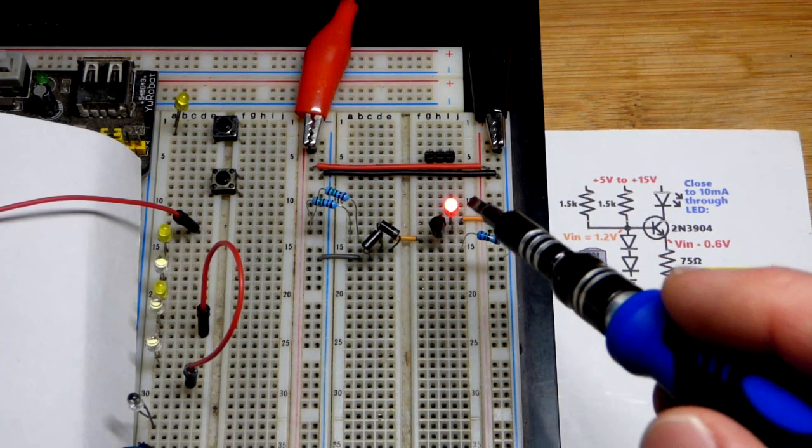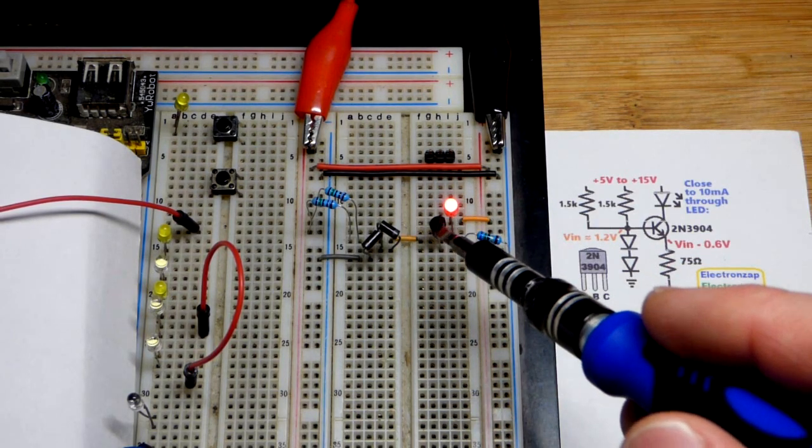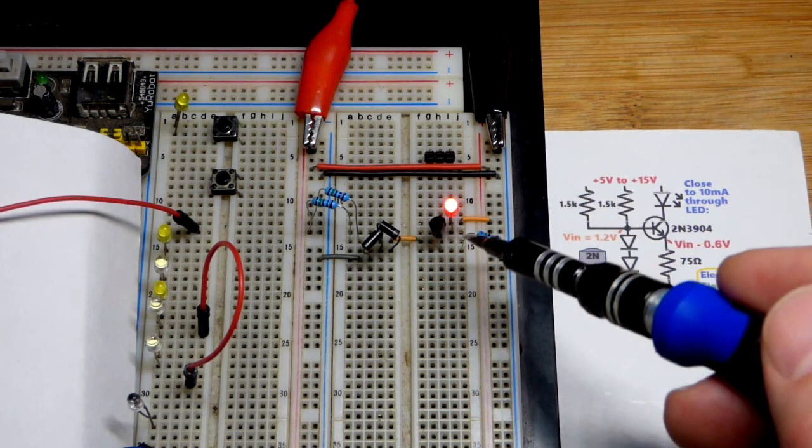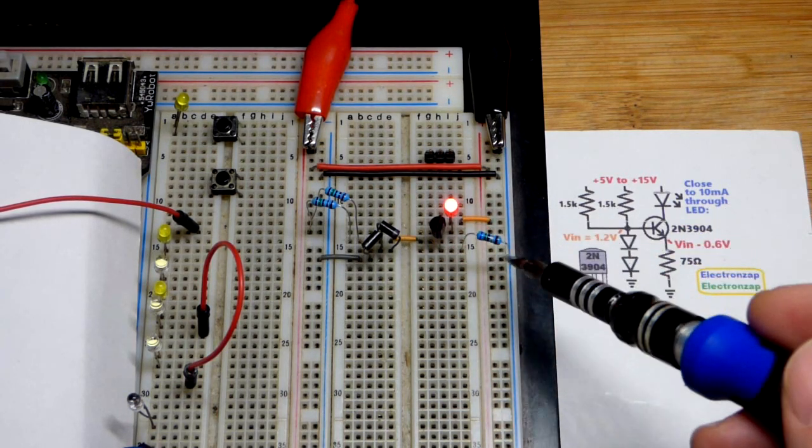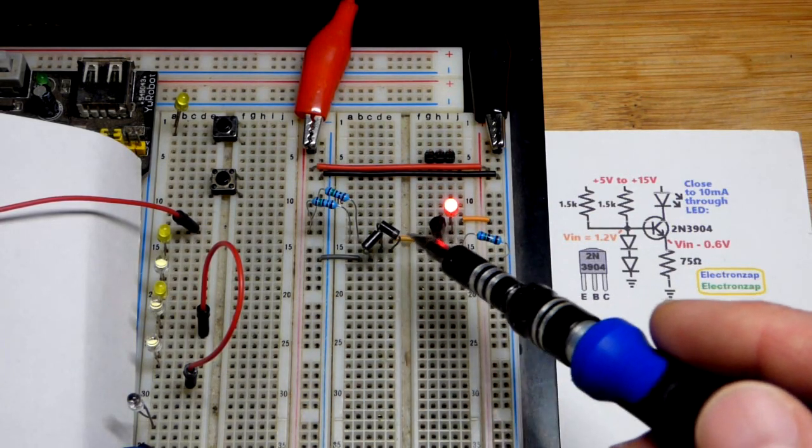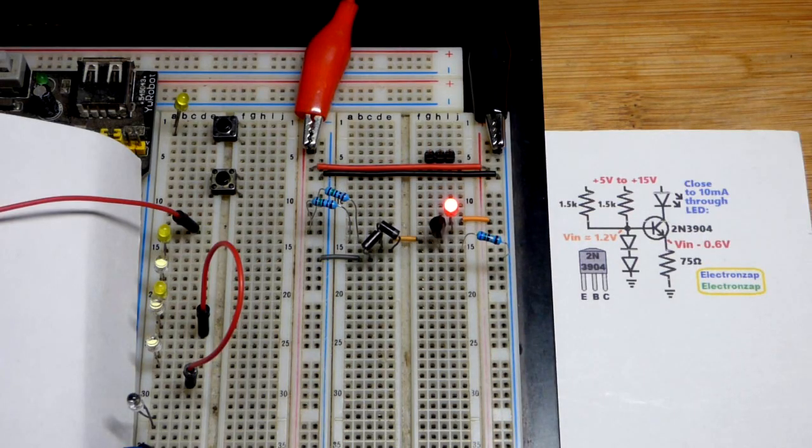So now the way we made this current source, that's an NPN bipolar junction transistor. We got a resistor to the emitter, load is on the collector side. So what that does is set a voltage across the emitter resistor based on the voltage we set here. I have a couple forward bias rectifier diodes.